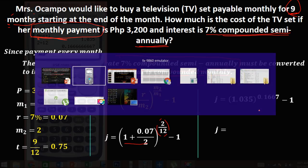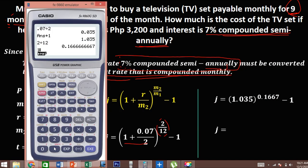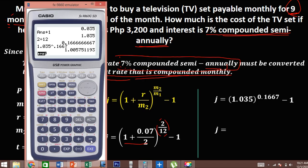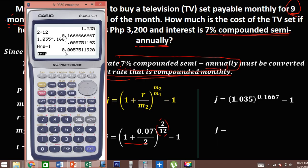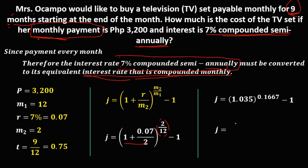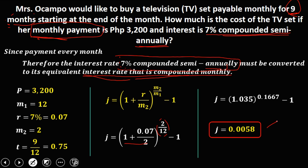To solve for J: 1.035 to the power of 0.1667 equals, then minus 1, gives 0.0058. So J is 0.0058. This is now the interest rate compounded monthly.